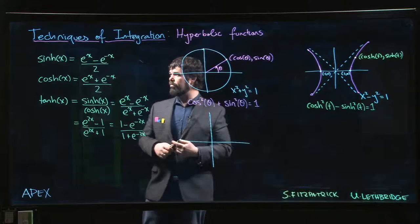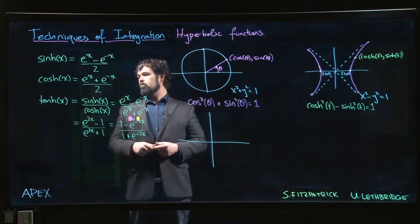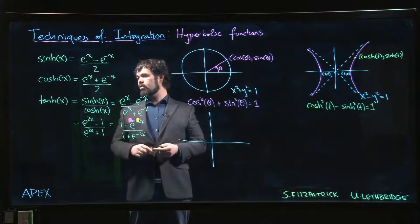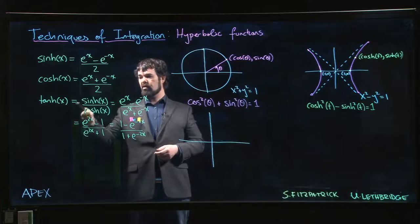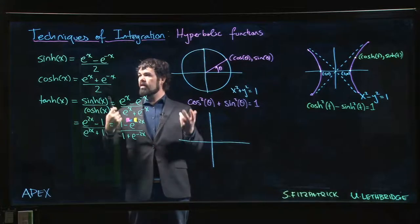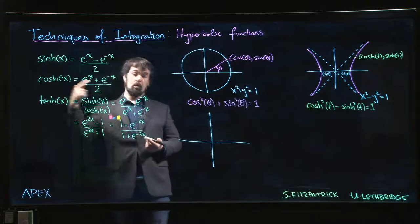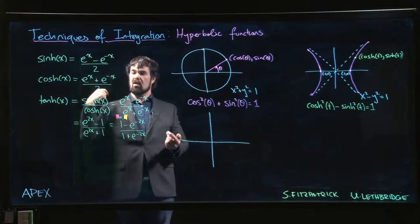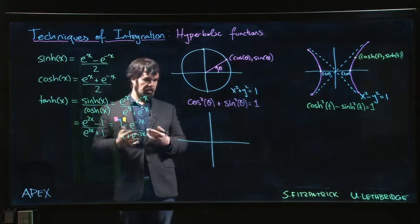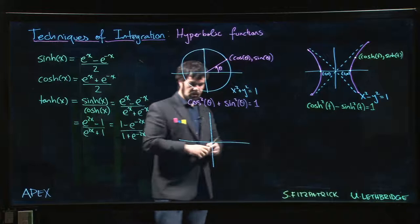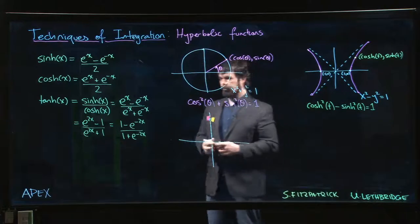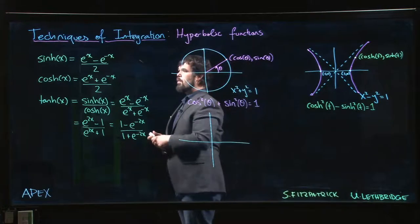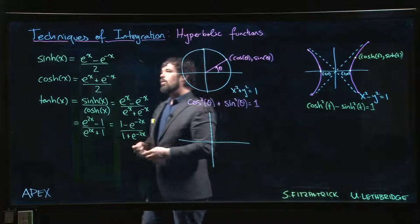And of course there are three more that I didn't write down, but they're less commonly used. If we need them, they're defined in the obvious ways: hyperbolic cotangent is cosh over sinh, hyperbolic secant is one over cosh, hyperbolic cosecant is one over sinh. We can discuss those as well. Now, what does hyperbolic sine look like?